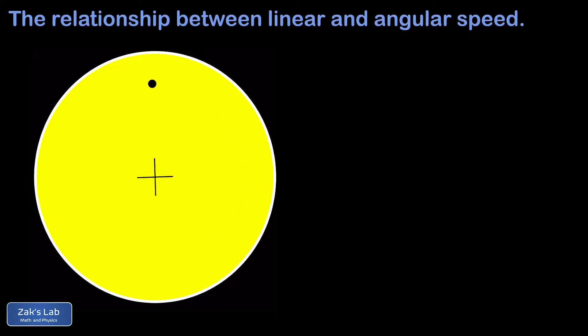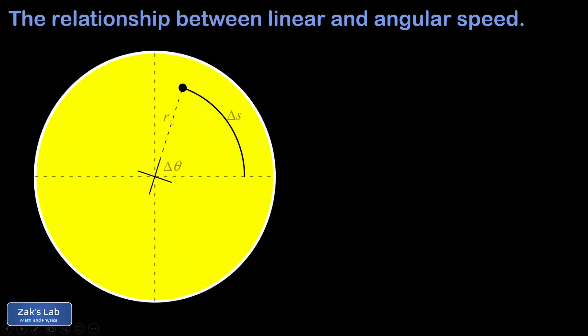And as that disk rotates for a time of delta t, we see that the spot traces out an arc. The radius is r, the angle is delta theta, and the arc that was traced out is delta s.